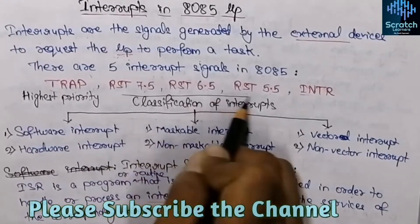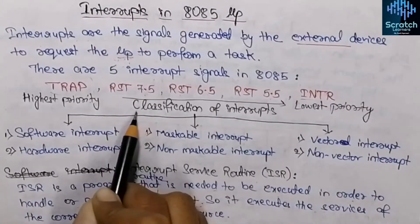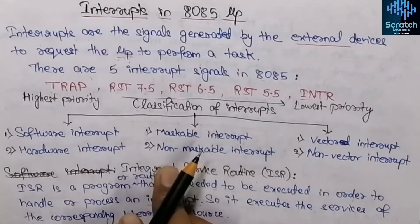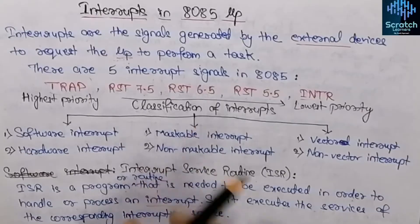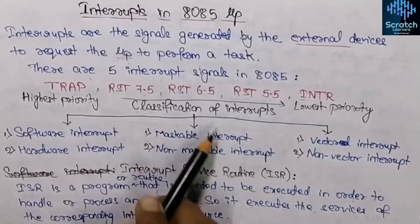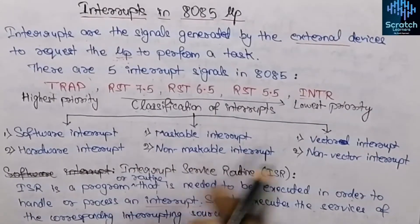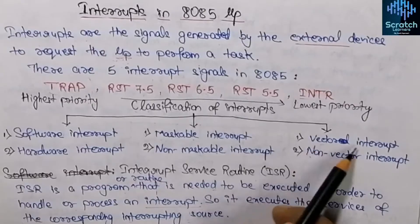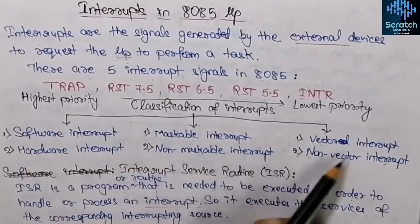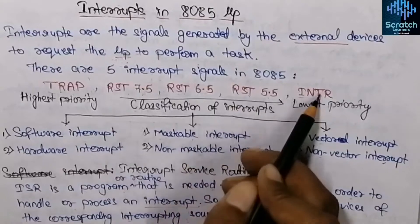Now let's come to the classification of interrupts. Interrupts in the 8085 microprocessor can be classified in three ways: the first is software interrupt and hardware interrupt; the second is maskable and non-maskable interrupt; and the third is vectored interrupt and non-vectored interrupt. We will now discuss all these classifications and then discuss each interrupt signal one by one.